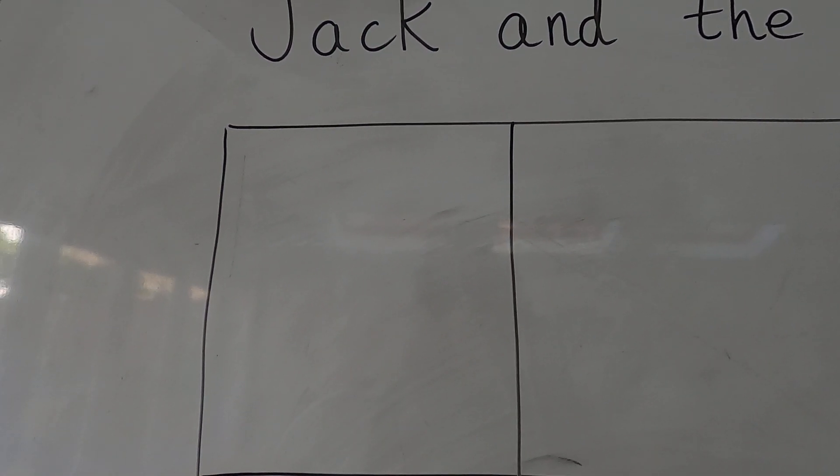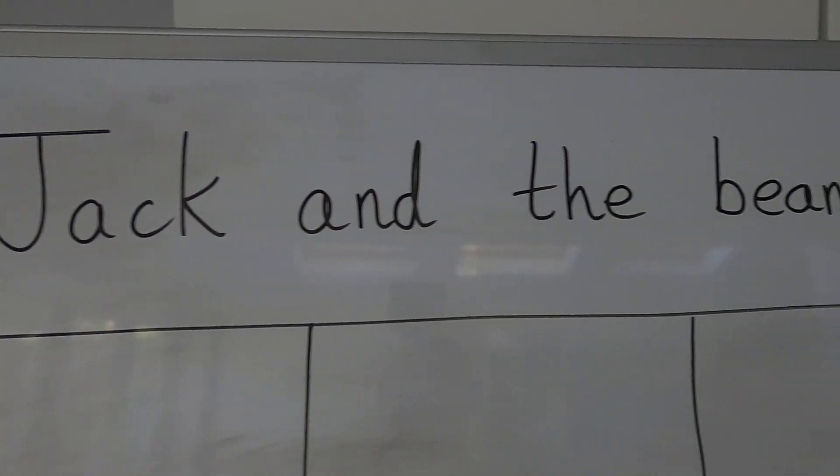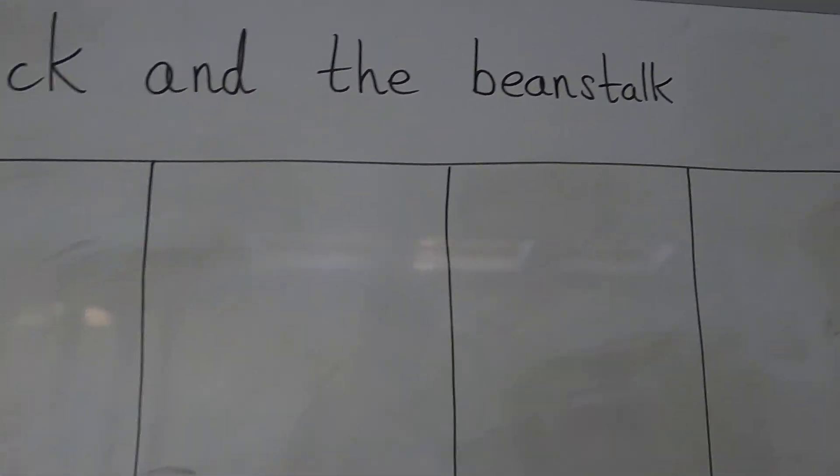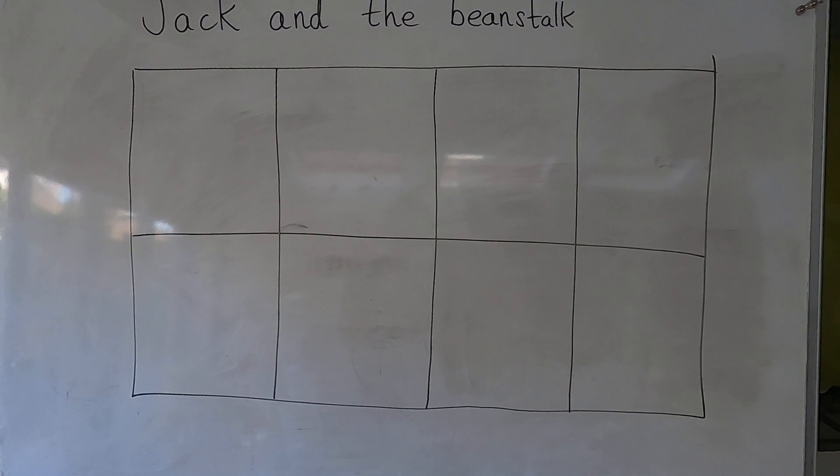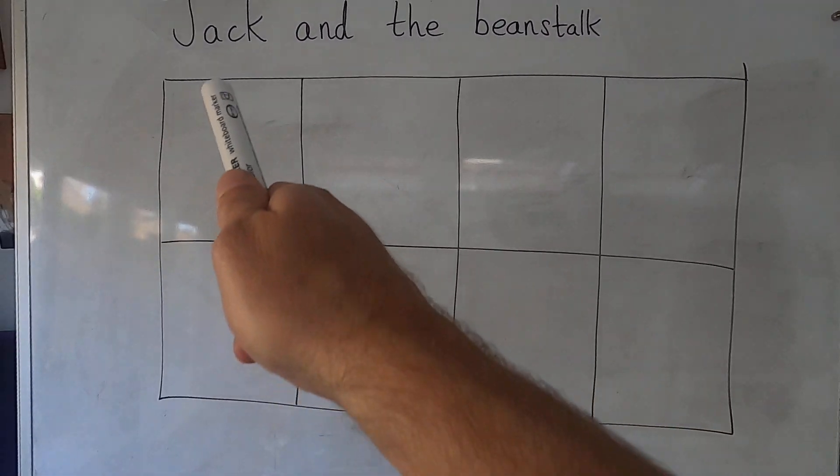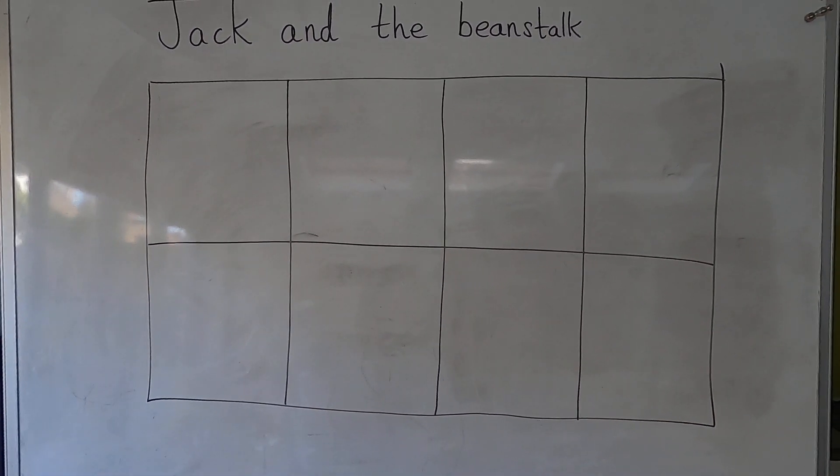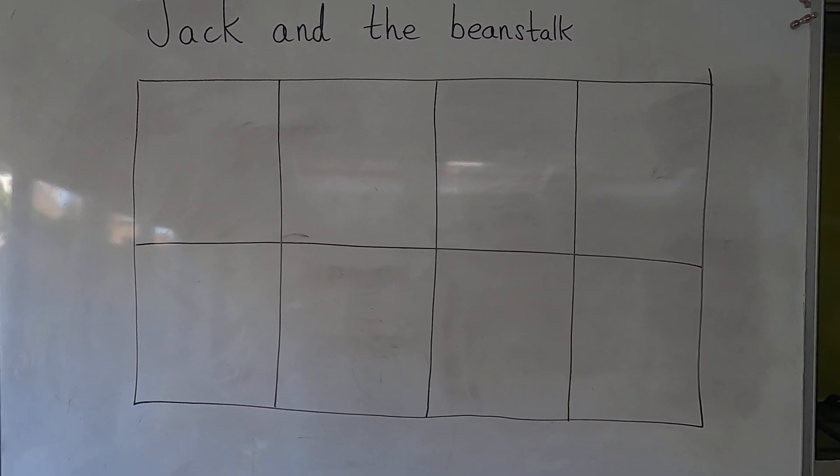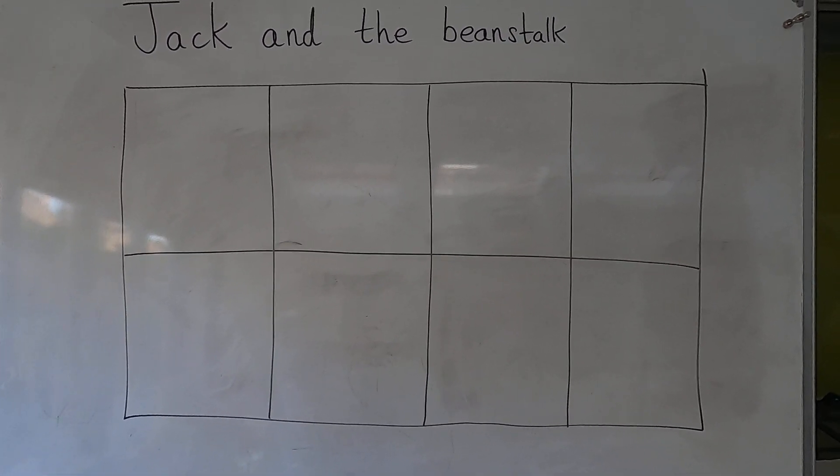Hi, I'm going to draw a story map for Jack and the Beanstalk. I've got my story map outline and it's got eight holes, eight spaces to draw, and each will be one part of the story.